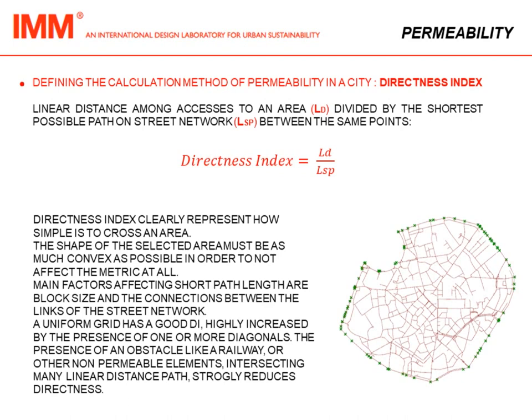A uniform grid, for example, has a good directness index, highly increased by the presence of one or more diagonals. The presence of an obstacle like a railway or other non-permeable elements intersecting many linear distance paths strongly reduces directness.